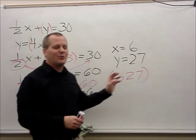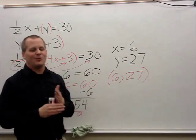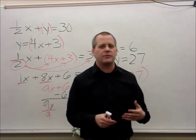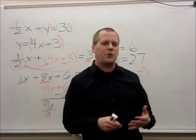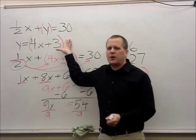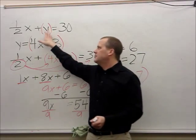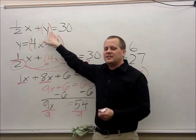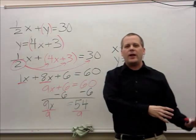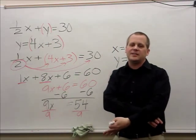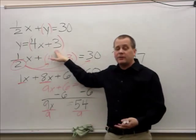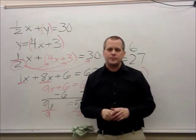In case you forgot how to list your coordinates, think of the alphabet: x always comes first, y always comes second. So these two lines will cross at (6, 27). Hopefully this helps as you go through the substitution process — keep in mind, we're replacing something with something else, taking something away and replacing it with another variable or number.